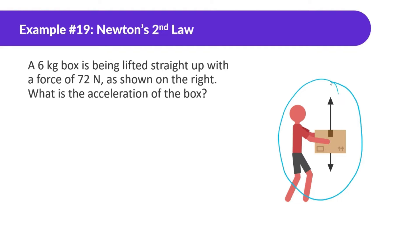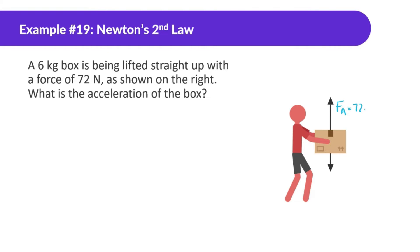Most people are just going to be tempted to do sum of all forces equal to mass times acceleration — 72 equals 6 times a. However, as you can see in this diagram, there are two forces. Yes, this person is lifting it up with a force applied of 72 Newtons, but there's another force acting on the box — the force of gravity. Force of gravity is mass times gravity, or 6 times 10, which is 60 Newtons.